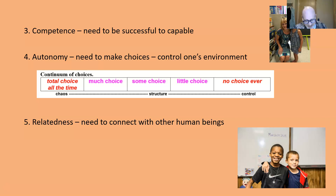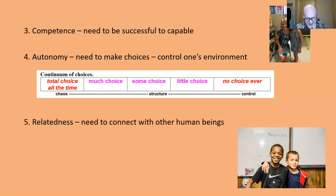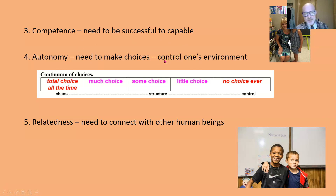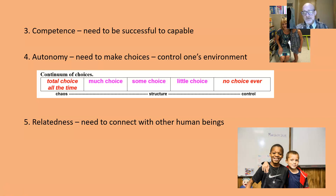Human beings naturally want to make choices to control their environment. They need someone to say, 'You choose, you decide.' Teachers need this as well — they need this autonomy. By the way, teachers need to feel competent instead of being beat up all the time. Autonomy is the need to make choices to control one's environment, and we seem to take all of this out.